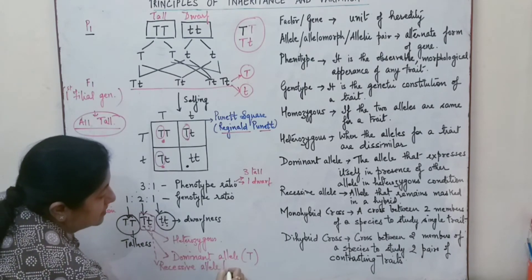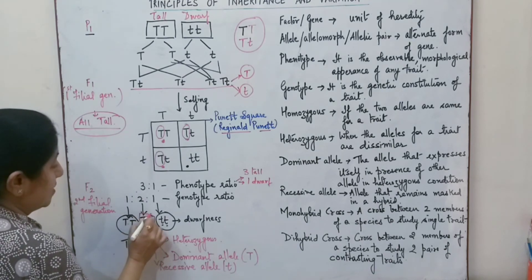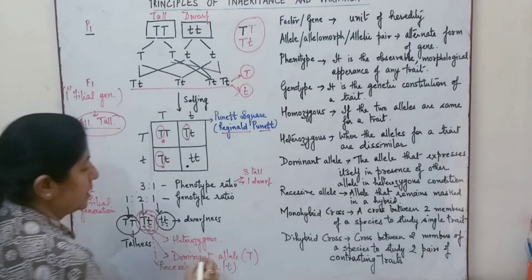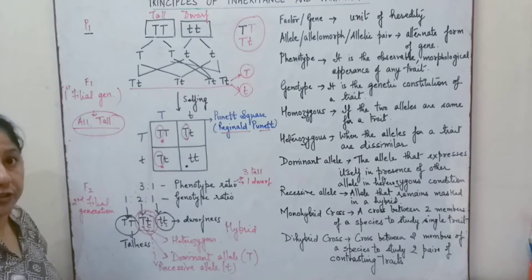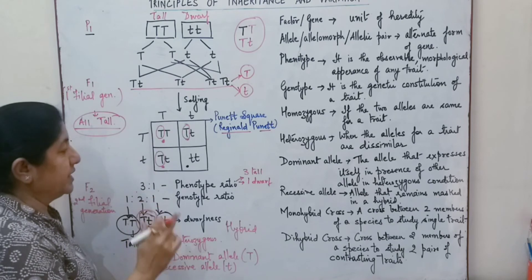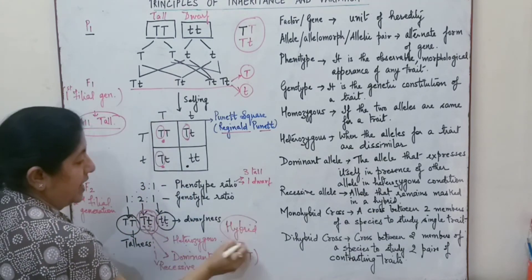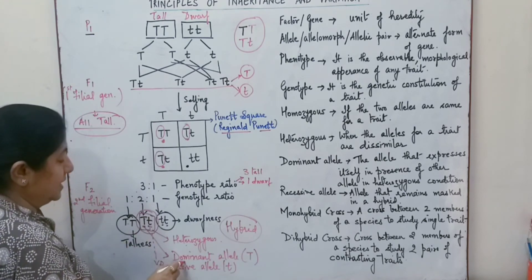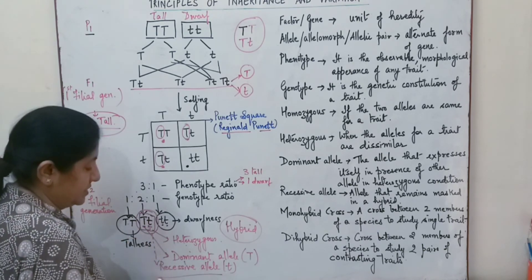This heterozygous condition we obtain is also called a hybrid, because it is a combination of both alleles from different traits — tallness and dwarfness. In a hybrid, the allele that expresses itself is the dominant allele, and the allele which is unable to express itself is the recessive allele.